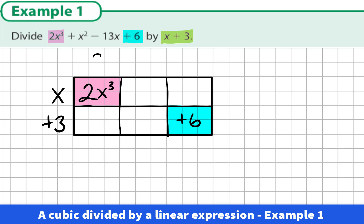Now we are ready to divide. x by what would give me 2x cubed? It's 2x squared. We could also work out the constant term of the quadratic expression. 3 times what gives me 6, or 6 divided by 3 is what? The answer is 2.